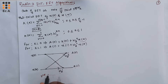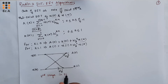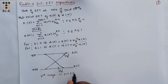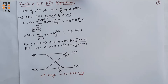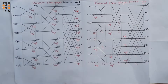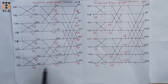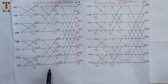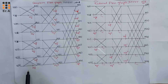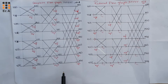This is the third stage in DIT FFT for N equal to 8. Now let us combine the first stage, second stage, and third stage to write a complete flow graph. After combining all the stages, we get a complete signal flow graph. This is the first stage, this is the second stage, and this is the third stage. This is the complete flow graph of DIT FFT for N equal to 8.